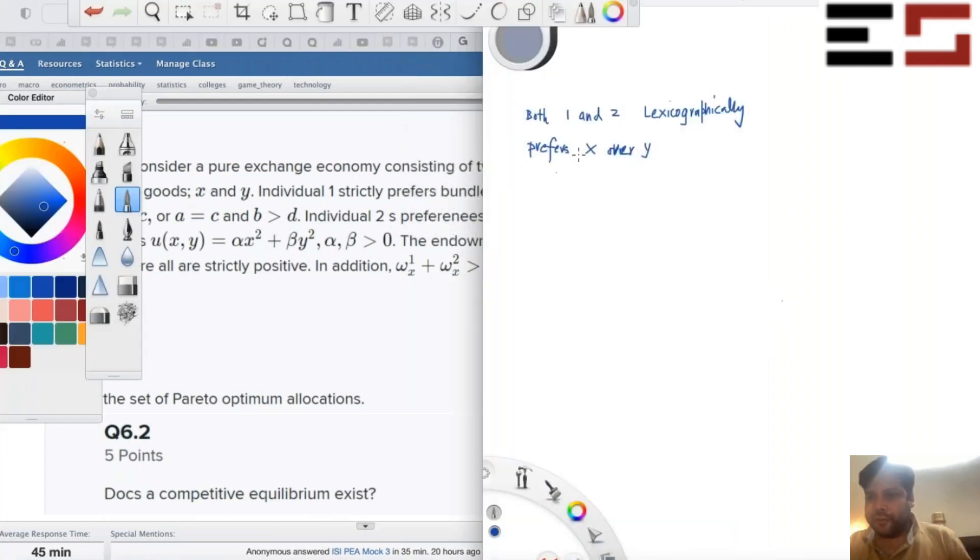So what is the set of efficient allocations in this? Well, we can draw a box and check. Actually, quite easy.